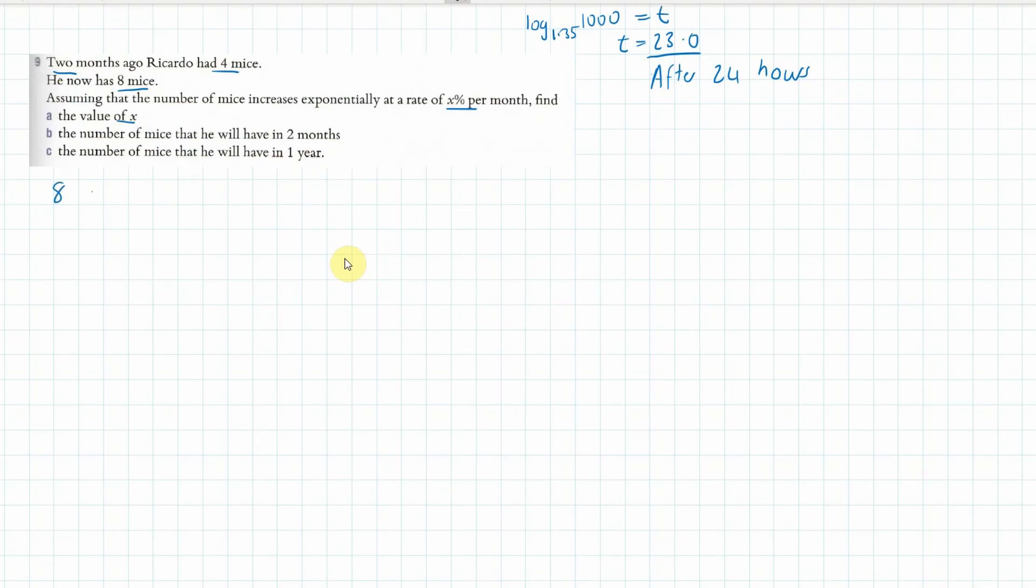Okay so what we're going to do is we know he's got eight now and we know that he started with four. And we're going to use our exponential formula with a rate of x over 100, and therefore to the power of two because he's had two months. I divide both sides by four so I get 2 is equal to 1 plus x over 100 to the power of 2.